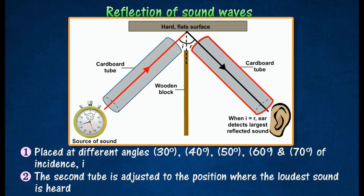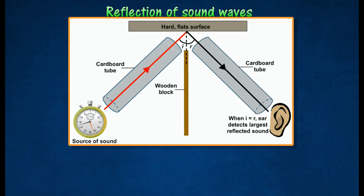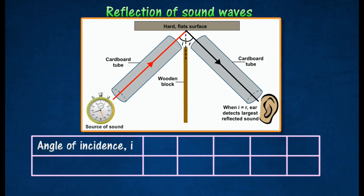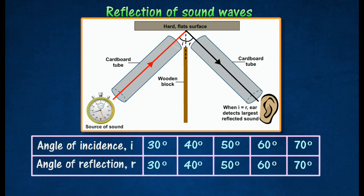Another cardboard tube is adjusted and one ear is placed close to one end of the tube to hear the loudest possible ticking sound of the watch. The angle of incidence i and the angle of reflection r are measured and recorded.